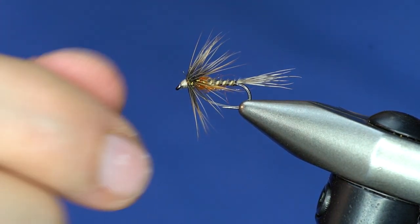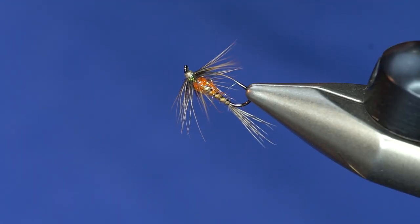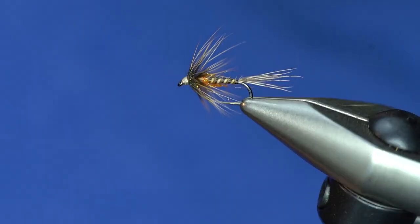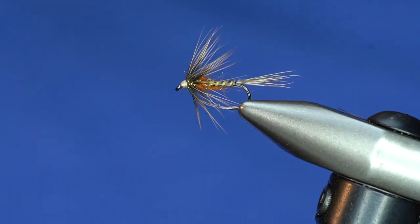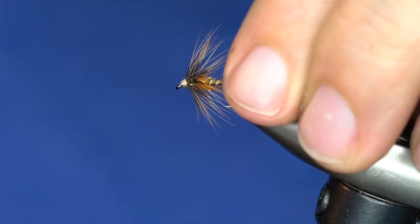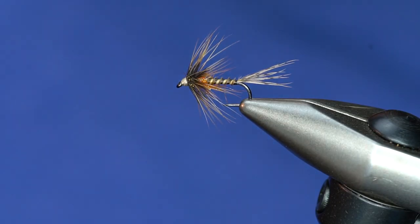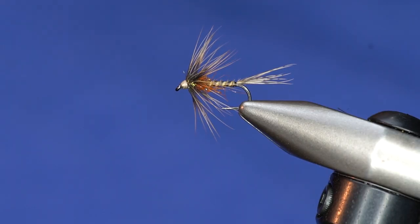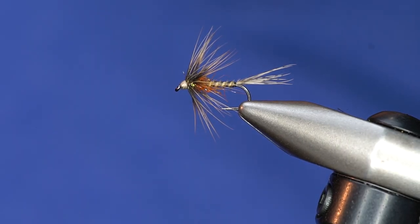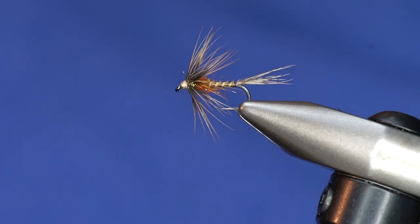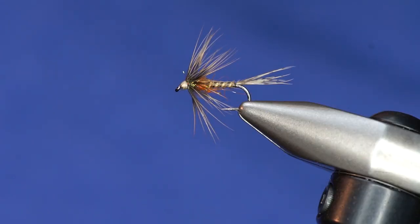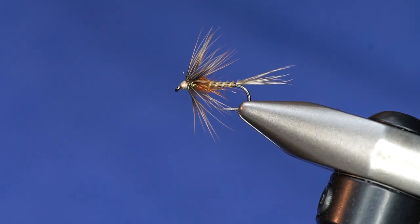So again, I'll fish these with intermediate line or even a floating line. And it's just a deadly Calabatus pattern. Could be just fished as an emerger or whatever you want, but it's unweighted so it will suspend and you can do a lot of stuff with it. So give one of those 4B hen capes a try. They're pretty awesome. It's a fun pattern to tie.